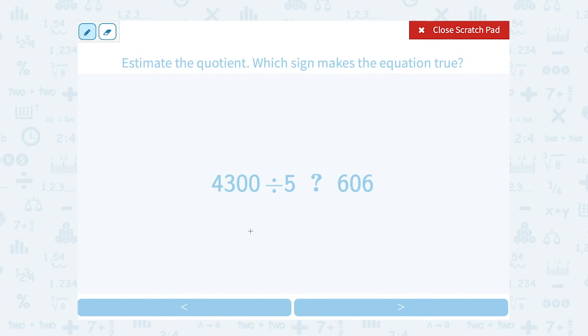Well, I could either round this up to 4,500 or down to 4,000. This is pretty close to 4,500. So let's say I take 4,500 divided by 5 and see what that gives me.